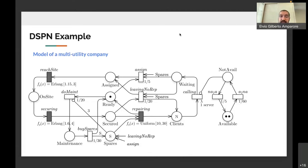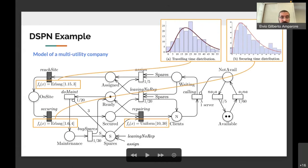Let's also see an example of a deterministic and stochastic Petri net, which is another extension of the generalized Petri net in which we also have general transition firing times which are represented by these black transitions. This is an example that we took that is presented in the paper, in which it is for a multi-utility company in which we actually obtained this timing from a log of the company, and we then modeled the system using the information available from the company logs. You can find the details of this model in the paper.